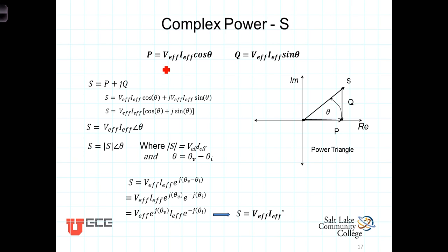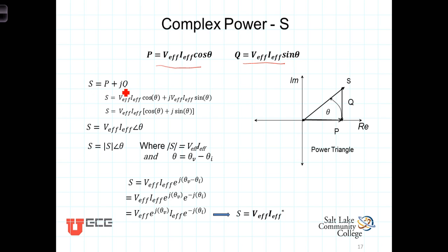When you look at how the average power and the reactive power are defined, we see they're very much similar. Both of them have the product of V effective times I effective, multiplied by either the cosine of theta for P or the sine of theta for Q. That causes us to think of combining these terms into a complex number called S, where S is equal to P plus jQ.